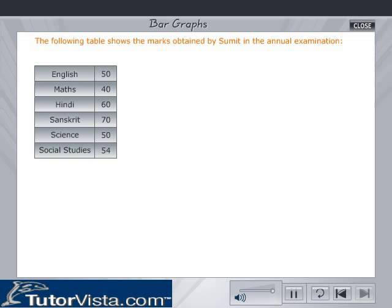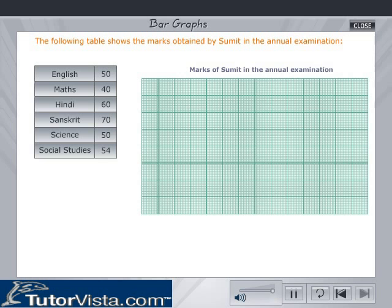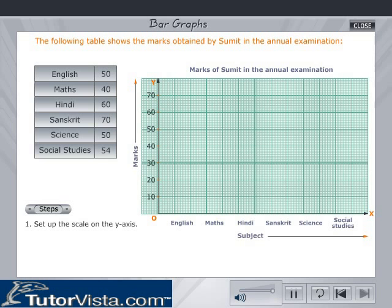Let us now study a problem. The table shows the marks obtained by Sumit in the annual examination: English 50, Maths 40, Hindi 60, Sanskrit 70, Science 50, Social Studies 54. Represent this data on a graph. Proceed as follows: Set up the scale on the y-axis.